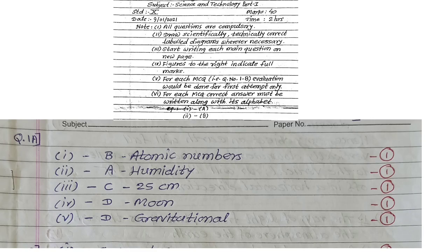For example, see there MCQ given, like question first, B answer is correct. No need to write that atomic numbers, what is mentioned in the options. Like that way, you write all the 5 MCQs and ABCD options.